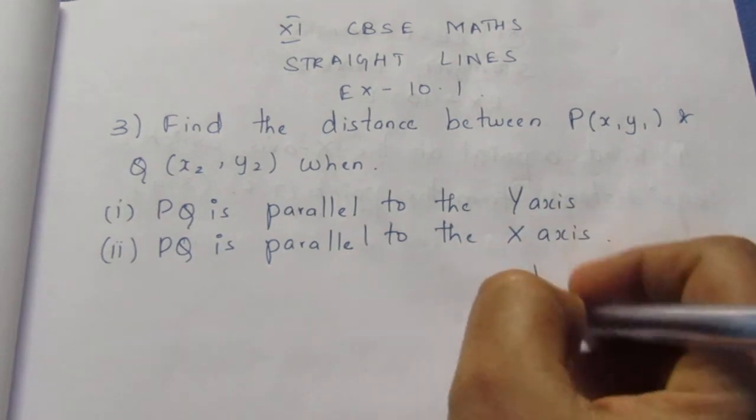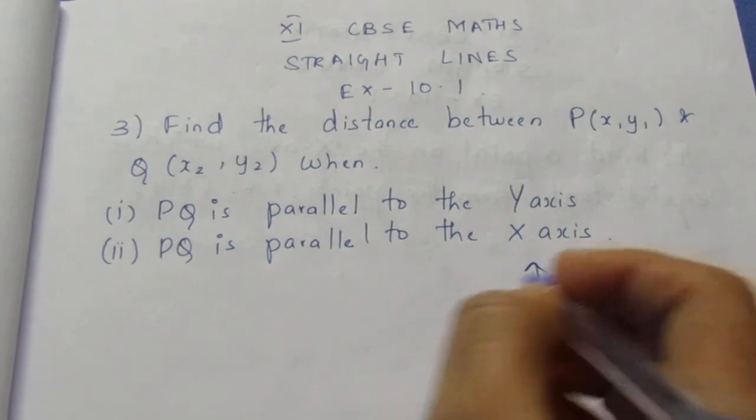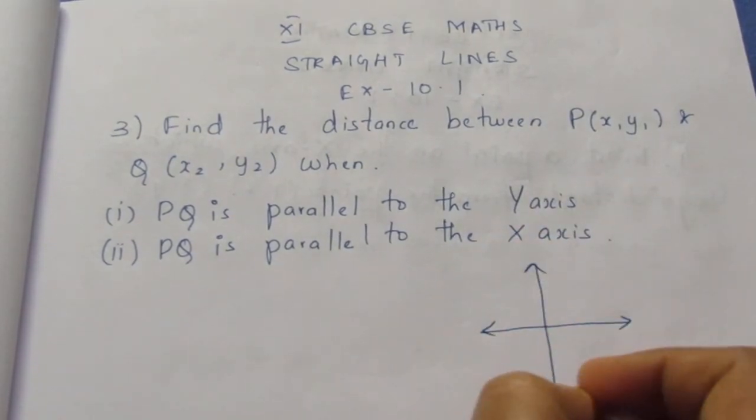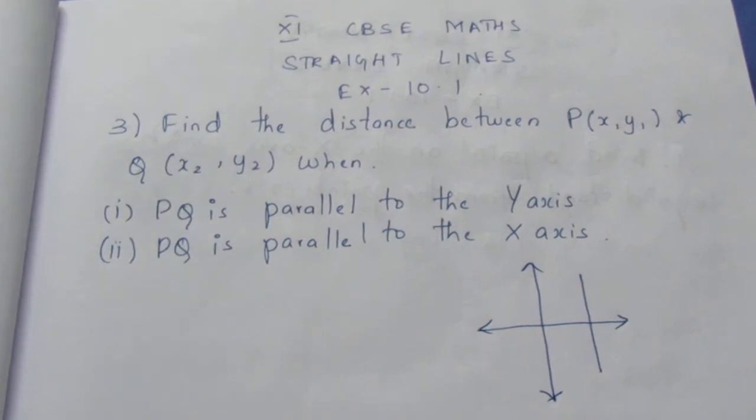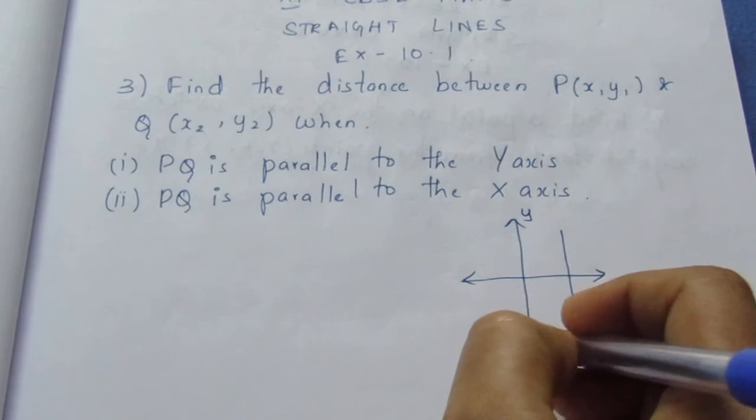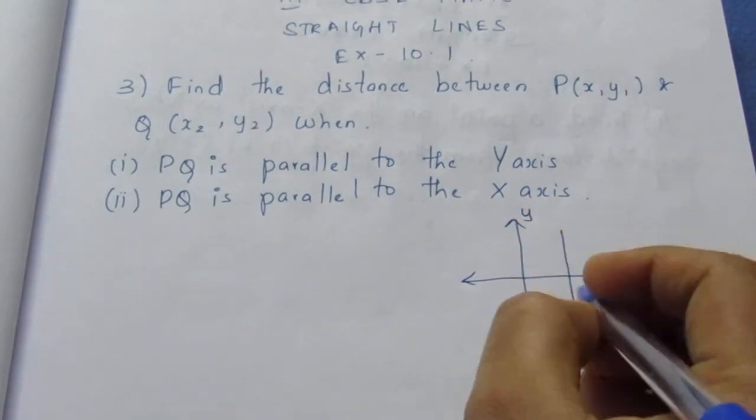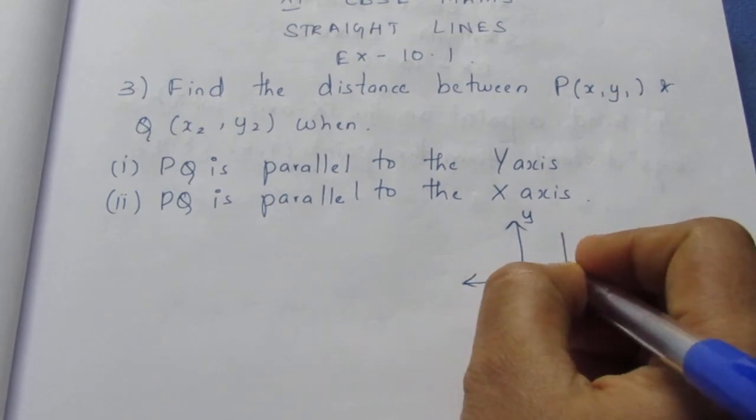Now before going to the sum you need to understand something. The first diagram is parallel to Y axis. If it is parallel to Y axis it will be like this. Now this is the line parallel to Y axis and what will be the coordinates of the point here if I take this to be 2.